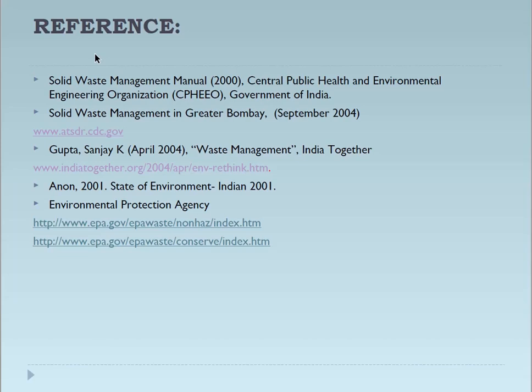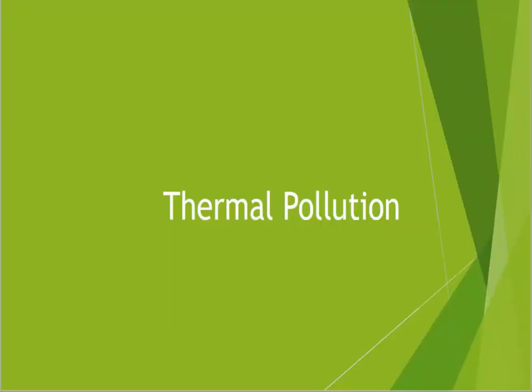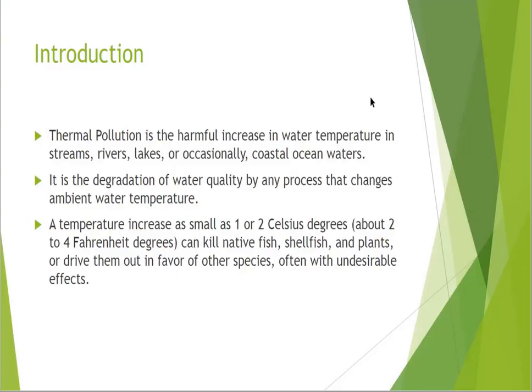We will continue with thermal pollution now, which is the last part of our syllabus. Thermal pollution is the harmful increase in water temperature in streams, rivers, lakes, and occasionally coastal ocean water. It is the degradation of water quality by any process that changes the ambient water temperature. A temperature increase as small as 1 to 2 degrees Celsius — about 2 to 4 Fahrenheit degrees — can kill native fish, shellfish, and plants and drive them in favor of other species, often with undesirable effects.